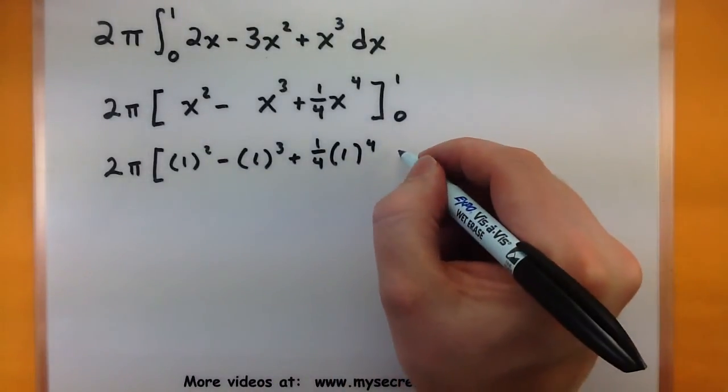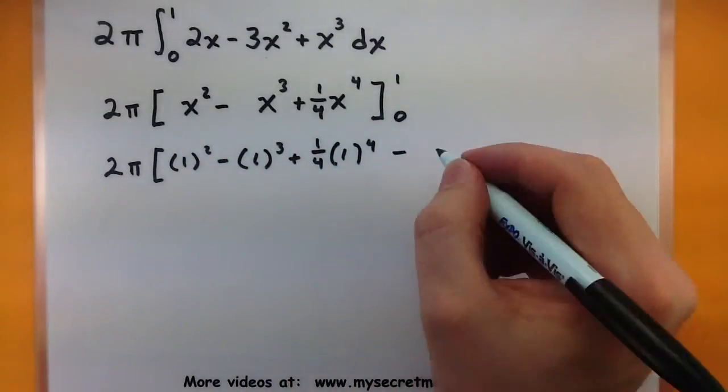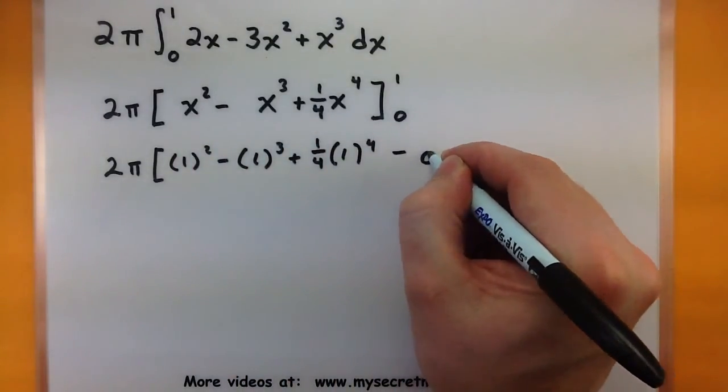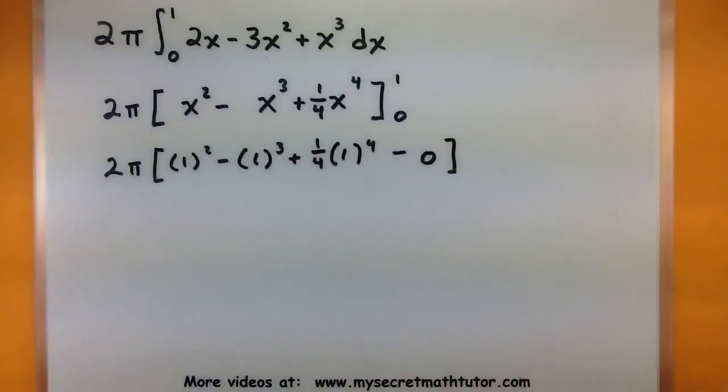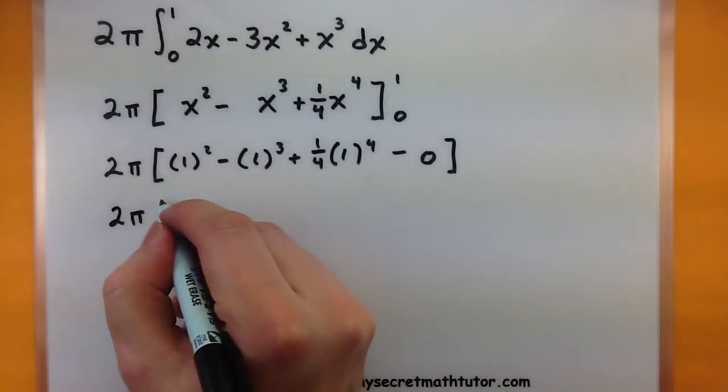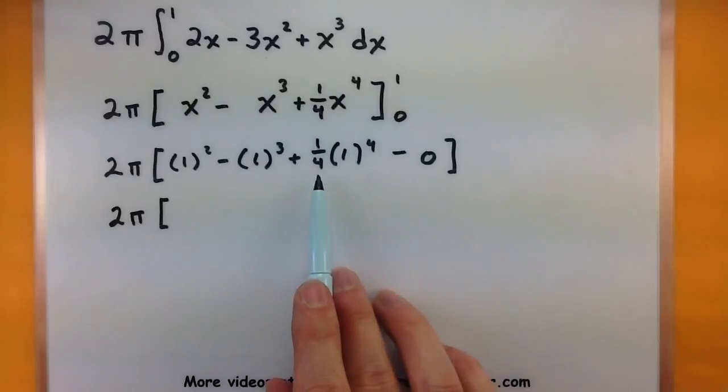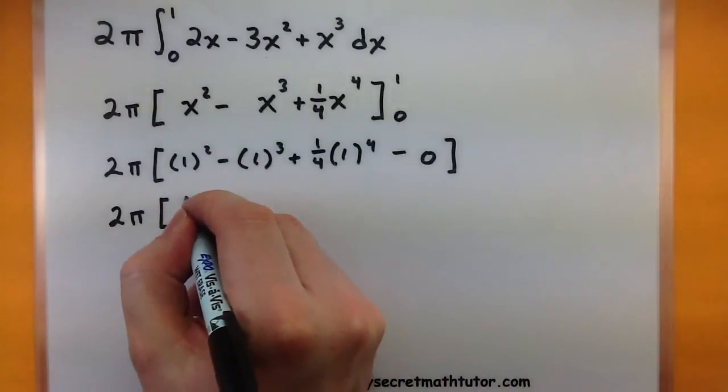Okay. So there's our top bound. Minus what happens when we plug in 0? Well, since all of these contain an x, we'll just subtract 0. Alright. I like to see all of those ones. This will make it nice and easy to simplify. So 1 minus 1, that will be 0. Then I have 1 4th times 1 to the 4th. 1 to the 4th is 1. So we'll just have 1 quarter.